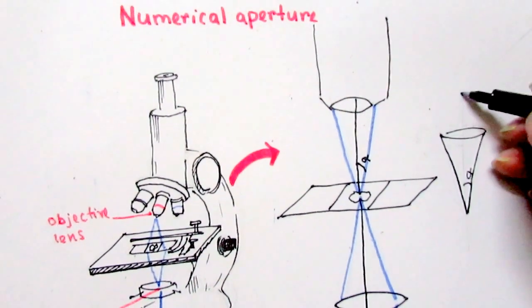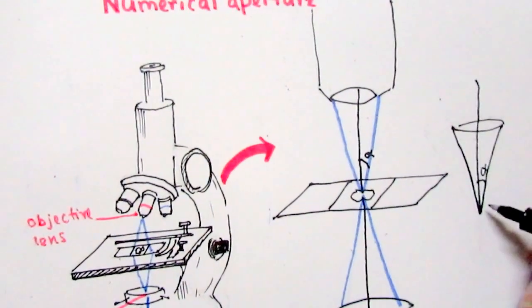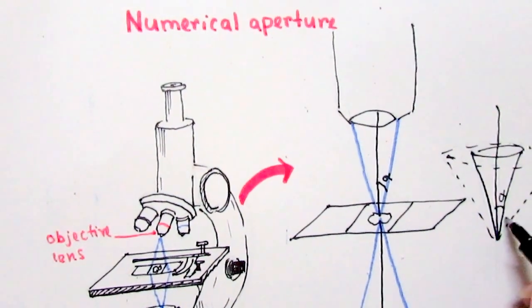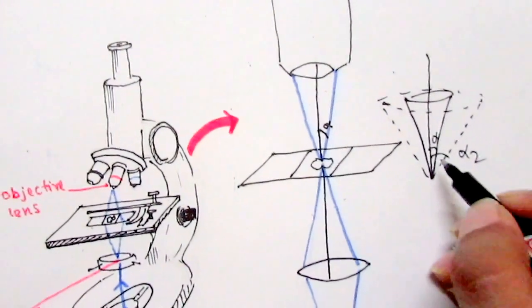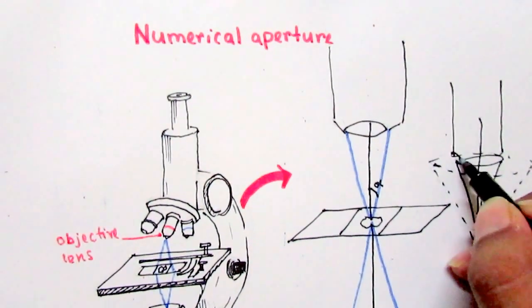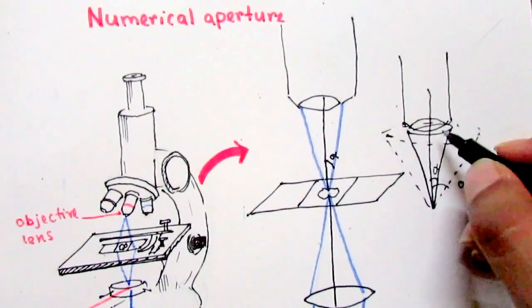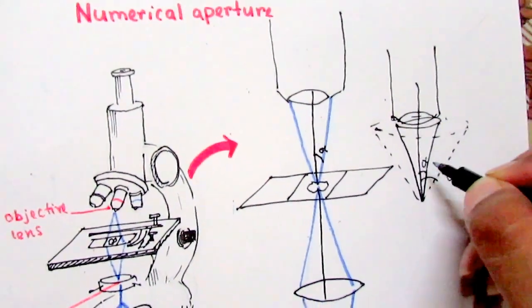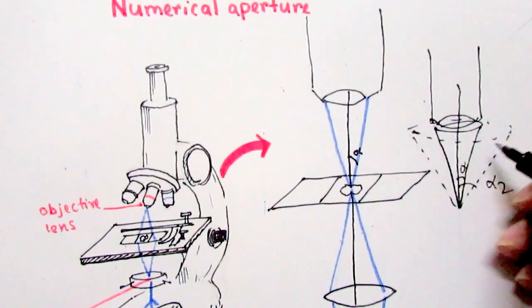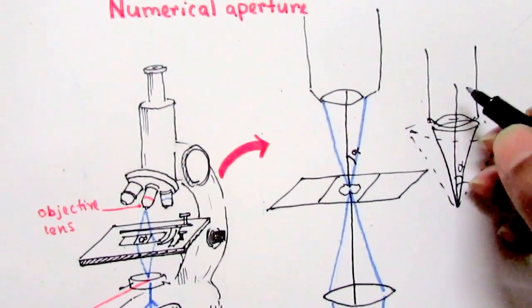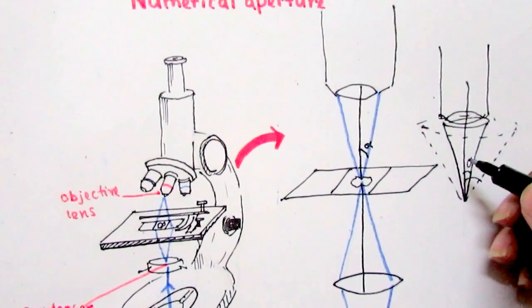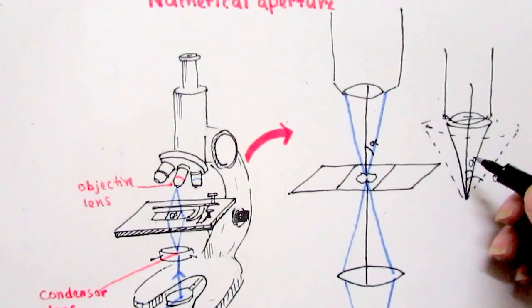For instance, we have a cone of light with angle alpha with the optical axis, and now assume we have another cone of light with a larger angle alpha two. The objective is only able to gather the light information within the small cone of angle alpha. If the angle with the optical axis is very large, the information in that big cone is not gathered by the objective. That is why we should always take care of the numerical aperture.